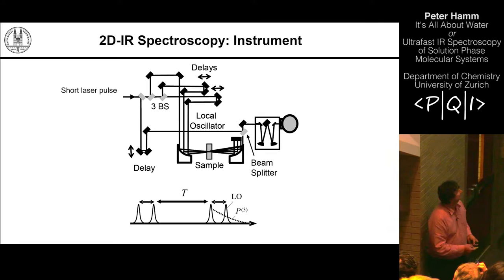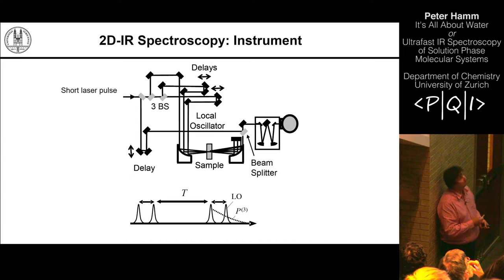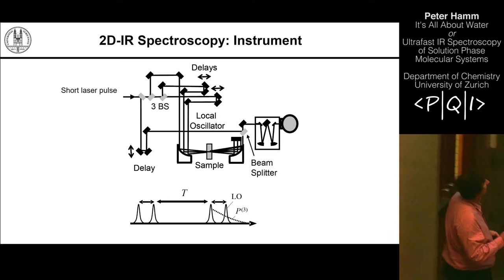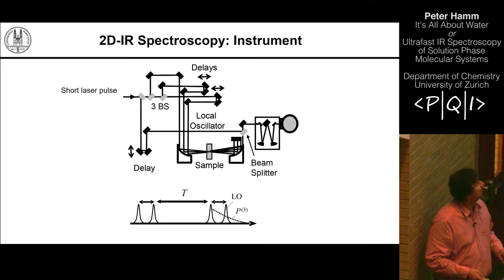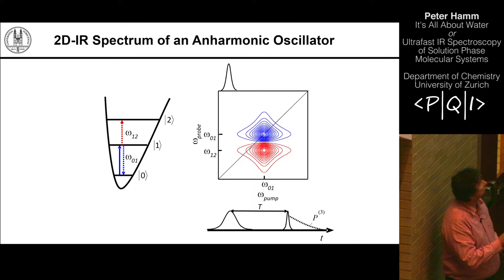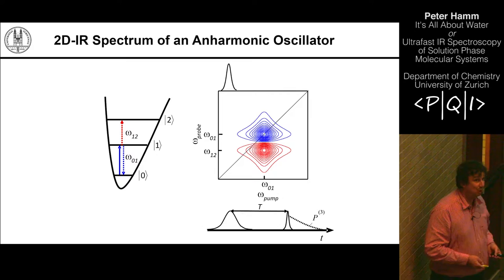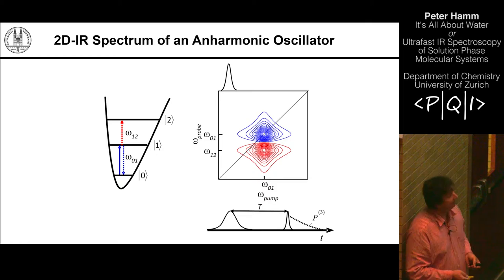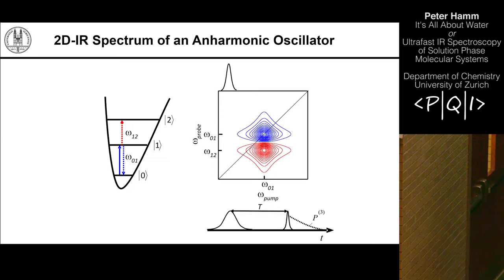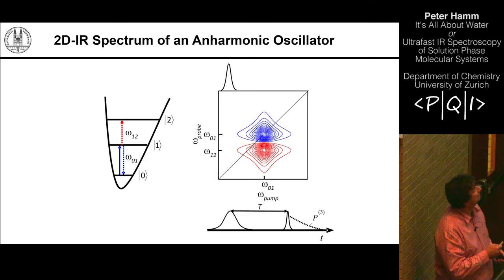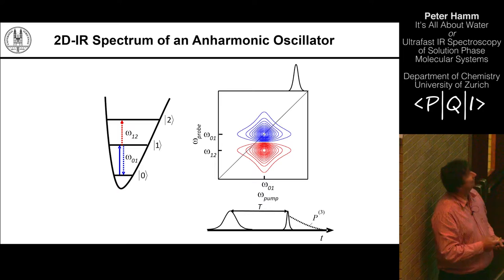Those pulse sequences typically happen on a timescale of a few hundred femtoseconds up to maybe a couple of tens of picoseconds. The prototype 2D IR spectrum of a vibrational transition looks like this. You can think of a 2D IR spectrum essentially like a pump-probe spectrum, with the addition that the pump spectrum is also spectrally resolved along a pump frequency axis. One technical realization — how it started — is that we have a pump pulse tuned in frequency across a resonance.